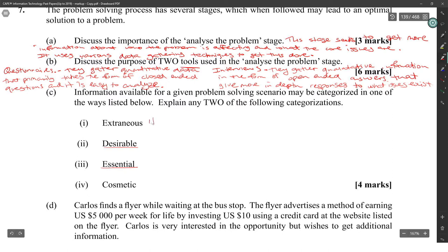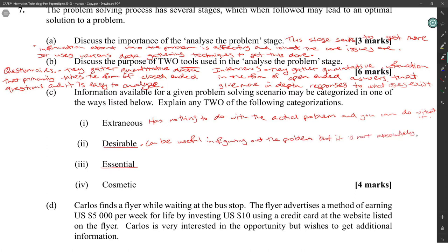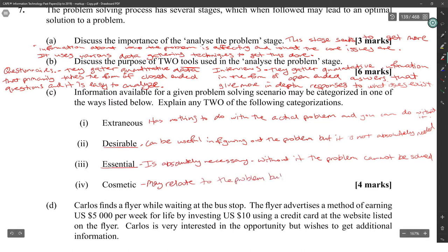Extraneous has nothing to do with the actual problem and you can do without it. Desirable can be useful in figuring out the problem but it is not absolutely necessary. Essential is absolutely necessary, without it the problem cannot be solved. Cosmetic may relate to the problem but has to do with the look and feel.